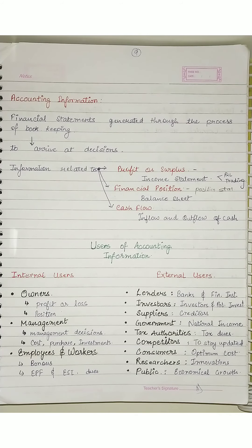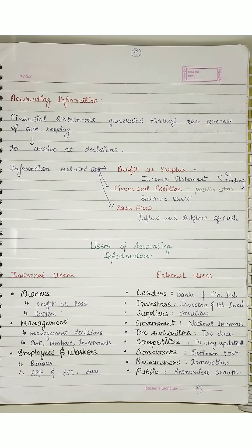The next thing is financial position. Financial position is the position statement. So what is a balance sheet? In balance sheet, assets and liabilities are both shown. The entity's loans and liabilities are shown, and from that, the company's financial position — the amounts and credibility — can be known.